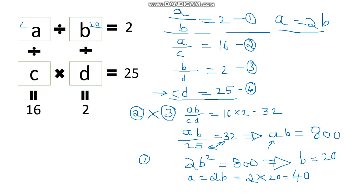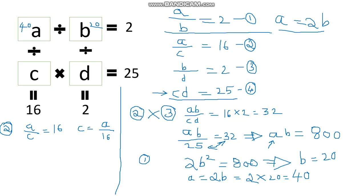From equation number 2, a divided by c equals 16, so c equals a divided by 16. Since a equals 40, we get c equals 40 divided by 16, which gives us c equals 2.5.